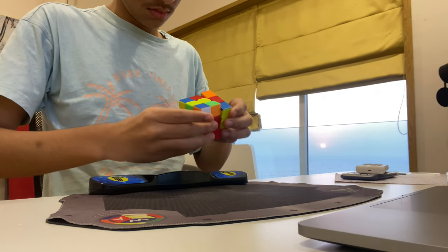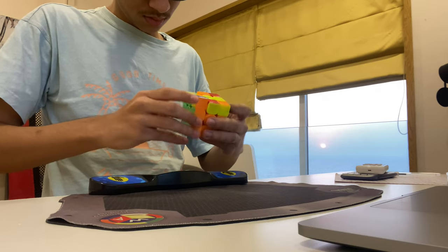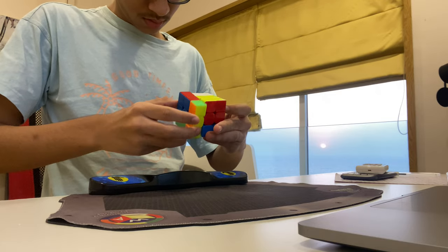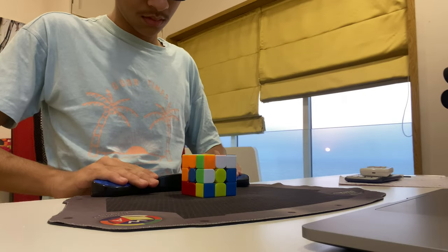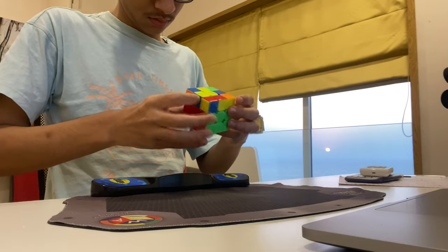My second choice would be a GAN cube but there are two main issues with them. They are way too unstable and expensive. Like I said earlier, my turning relies on flexible cubes but GAN cubes are too flexible to a point where it actually causes me to lock up and hinders my turning. So overall, I like the balance between speed, stability and flexibility on Moyu cubes.